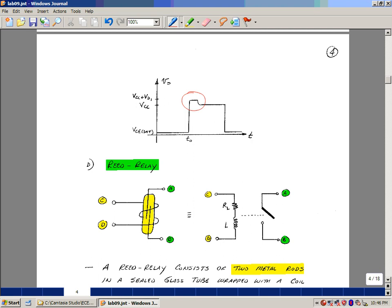There are several types of relays. One we're going to be using in lab is called a reed relay. It kind of looks like a reed. What it is is two metal rods in a sealed glass tube wrapped with a coil of wire around it. When current flows through the coil, it becomes an electromagnet. So we've got current flowing through here. Creates a magnetic field and literally closes the contacts of those rods.